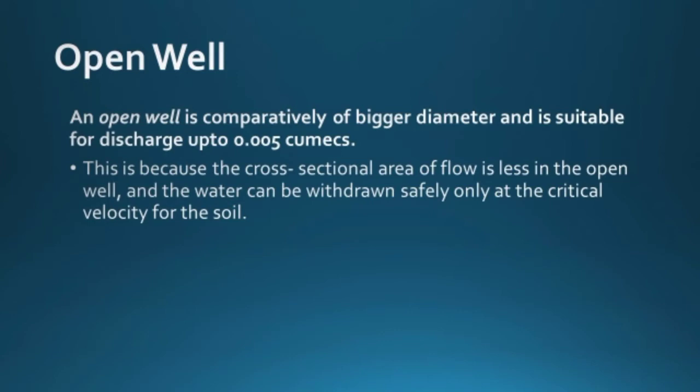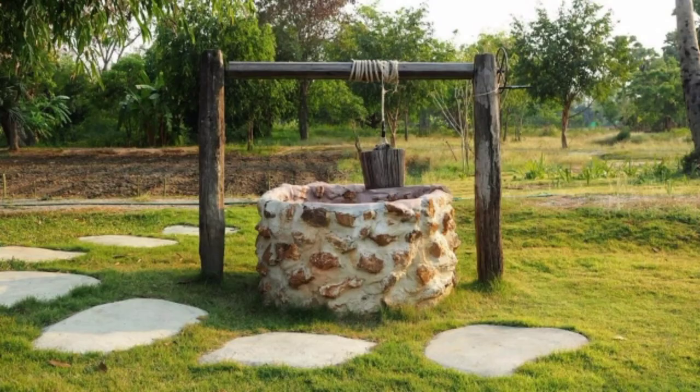If we are pumping water from a well and velocity is less than critical velocity, only water comes in — no soil particles will be disturbed or dislodged. If we increase the velocity beyond critical velocity for greater discharge, soil will also come in with the water. After some time, the well may implode — the walls of the well may get destroyed. In the case of open wells, we cannot increase velocity beyond a certain point because soil particles may come with water and the well may implode.